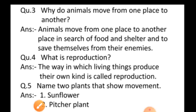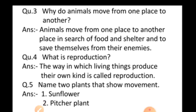Third question: why do animals move from one place to another? Animals move from one place to another in search of food and shelter, and to save themselves from their enemies. Fourth question: what is reproduction? The way in which living things produce their own kind is called reproduction. Fifth question: name two plants that show movement — sunflower and pitcher plant.